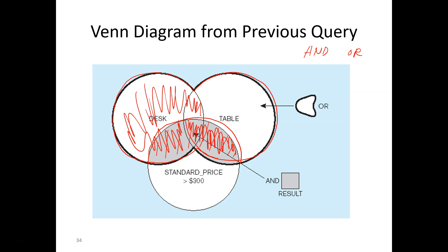The order of processing for boolean operators is: NOT is processed first, AND is processed next, and OR is processed last. For example, if we have WHERE product description NOT LIKE '%desk' AND OR product description LIKE '%table' AND standard price greater than 300 — without parentheses — it will first find things that are NOT desks, then apply AND for tables greater than 300, then OR to add the remaining results.